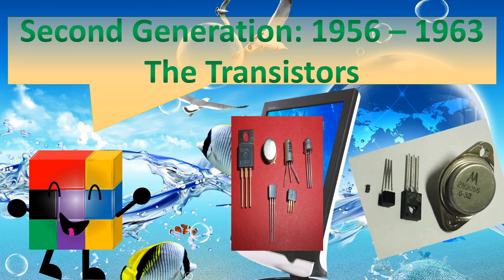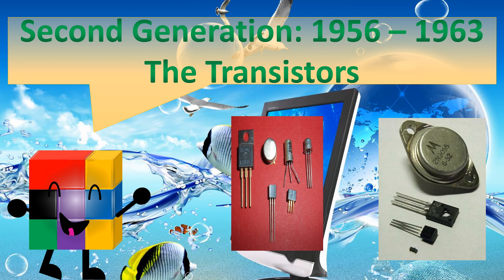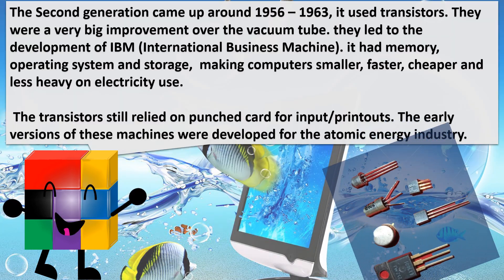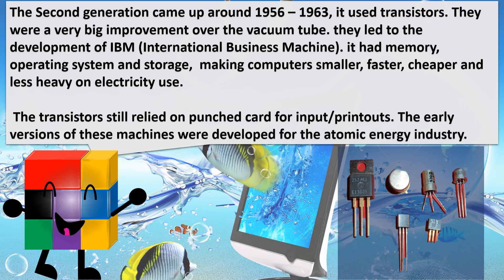Second generation, 1956 to 1963: the transistors. The second generation used transistors, which were a very big improvement over the vacuum tube. They led to the development of IBM, International Business Machine. It had memory, operating system and storage, making computers smaller, faster, cheaper and less heavy on electricity use. The transistors still relied on punch cards for input printouts. The early versions of these machines were developed for the atomic energy industry.